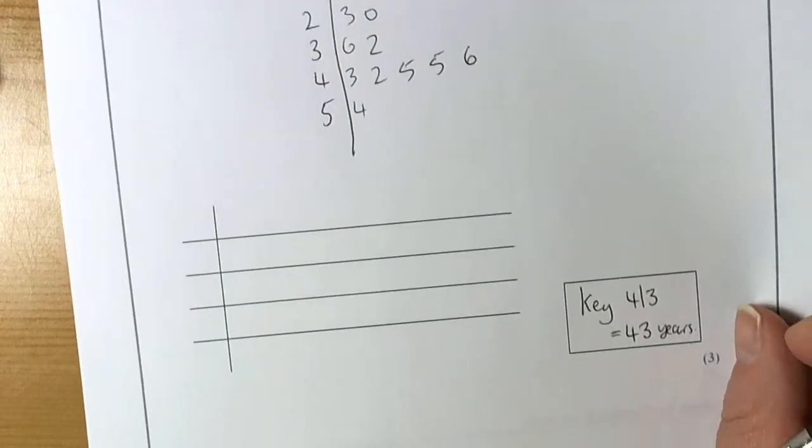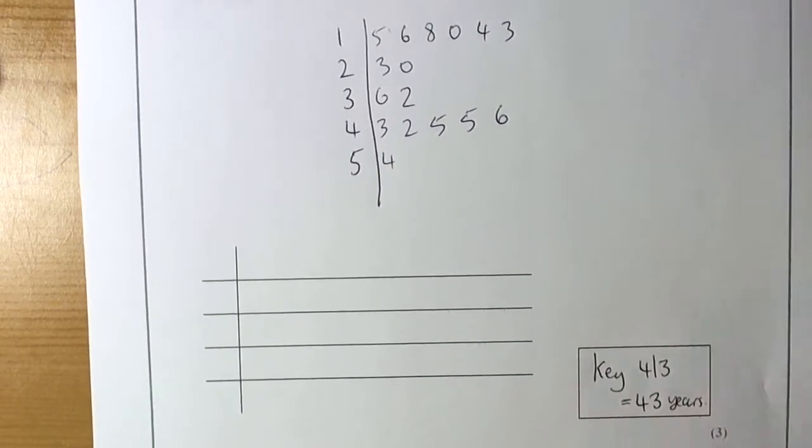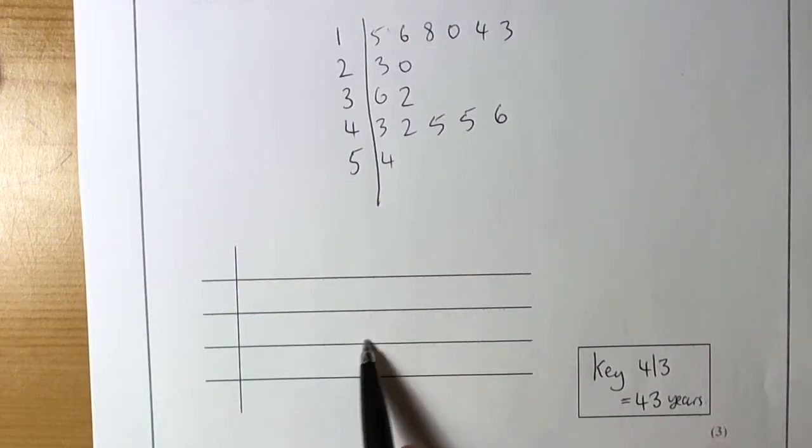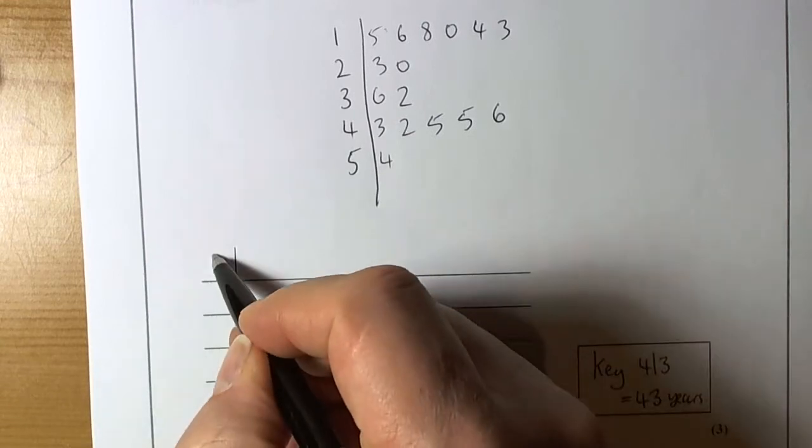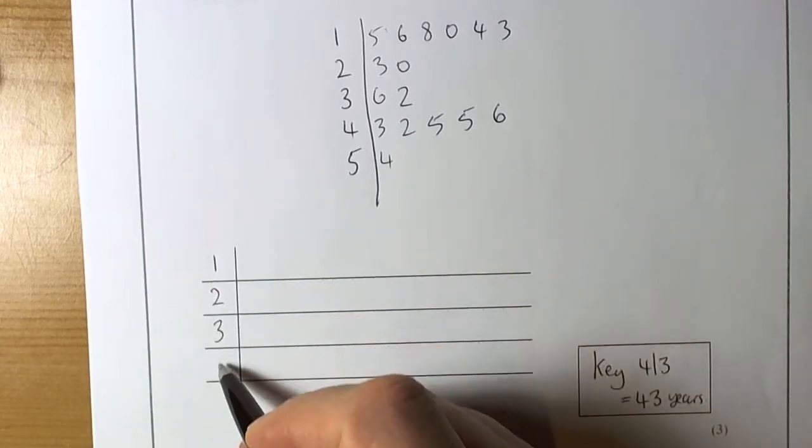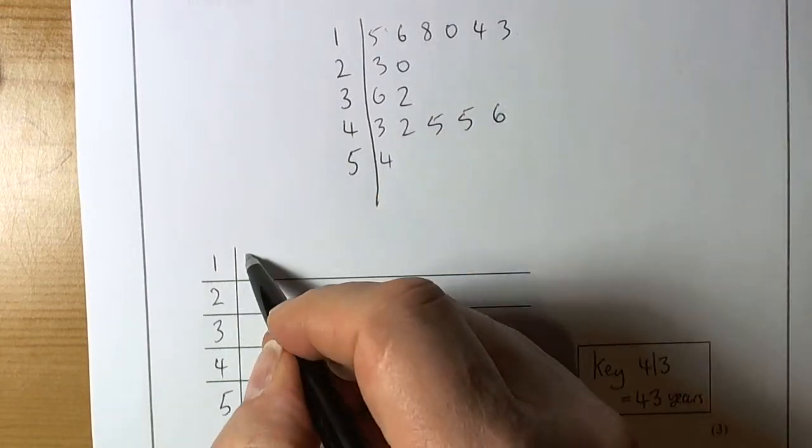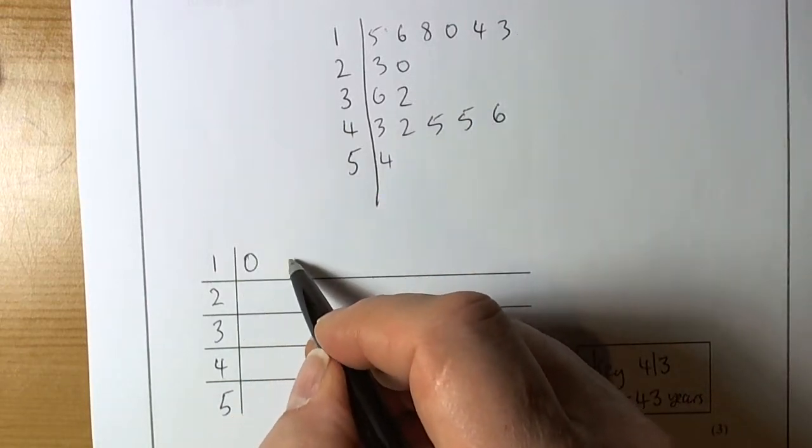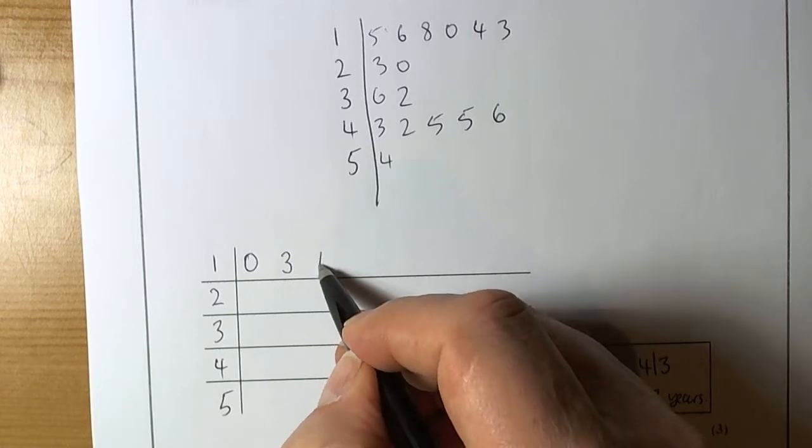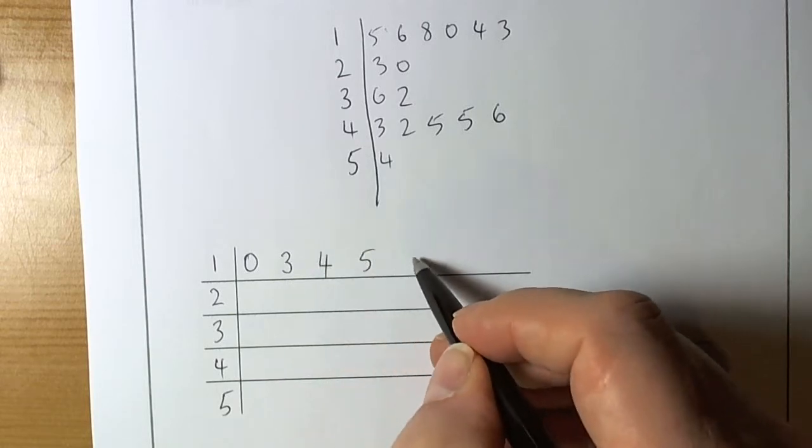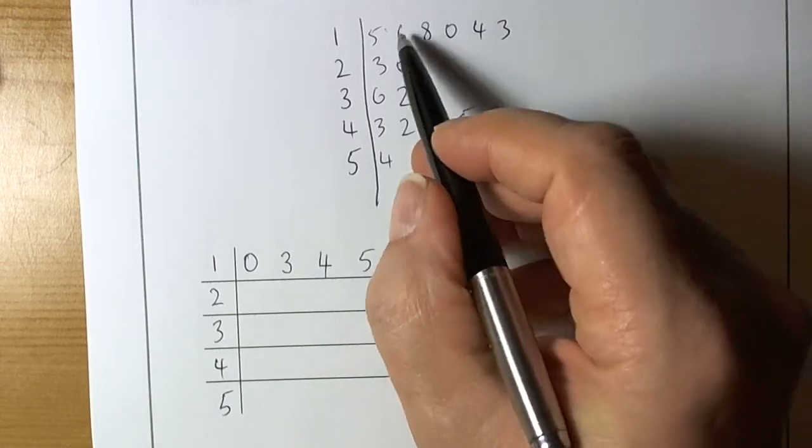But for the final answer, we use them leave diagrams to demonstrate data in size order, to look at the distributions. So 1, 2, 3, 4, 5. And in order then, we have a 0, followed by a 3, followed by a 4, followed by a 5, a 6, a 6, 8.